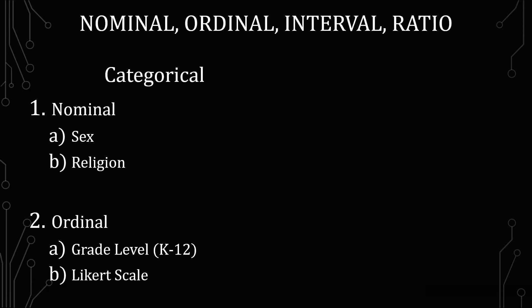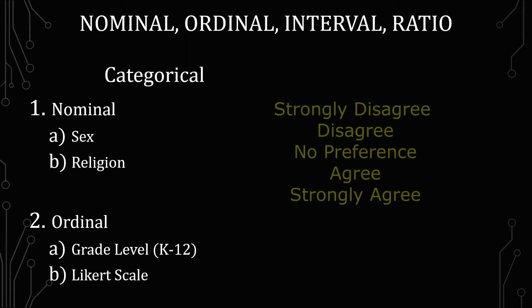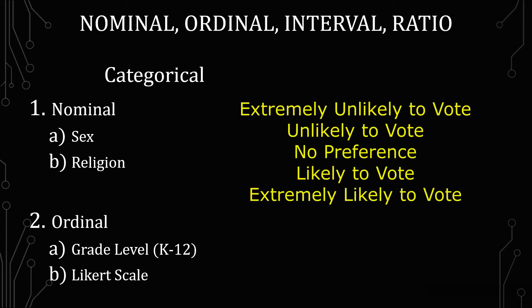An example would be you're asked a survey question about satisfaction. The satisfaction question ranges from were you extremely dissatisfied, dissatisfied, no preference, satisfied, or extremely satisfied. Or if it's about agreeableness or whether or not your likelihood of vote. There's a whole bunch of different ways you can make these scales.